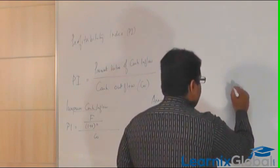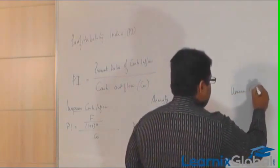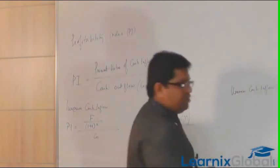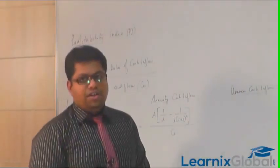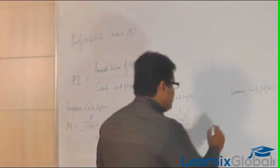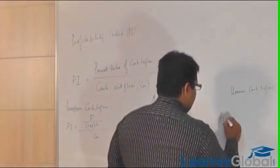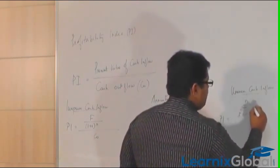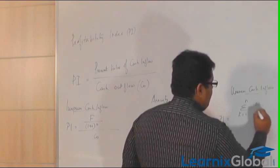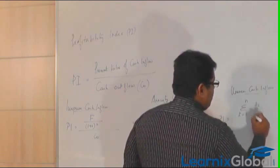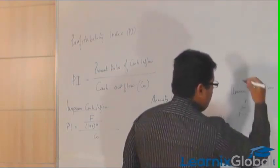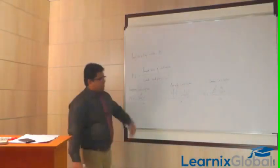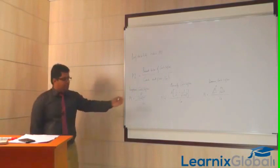For uneven cash inflow — where the cash flows are not equal every year — the formula is: profitability index equals the summation from t equals 1 to n of F_t divided by (1 + i) to the power t, the whole divided by cash outflow.